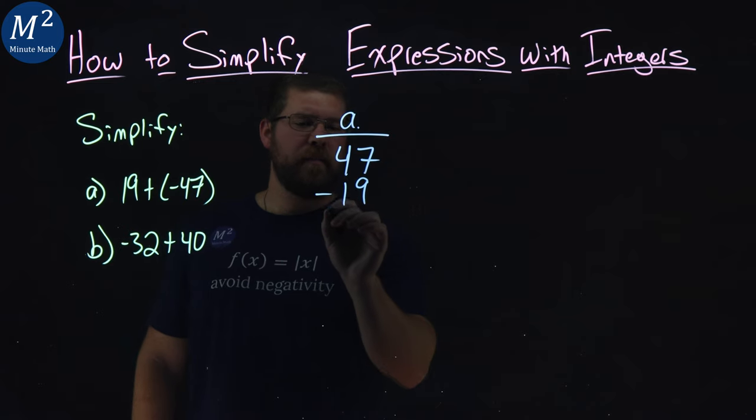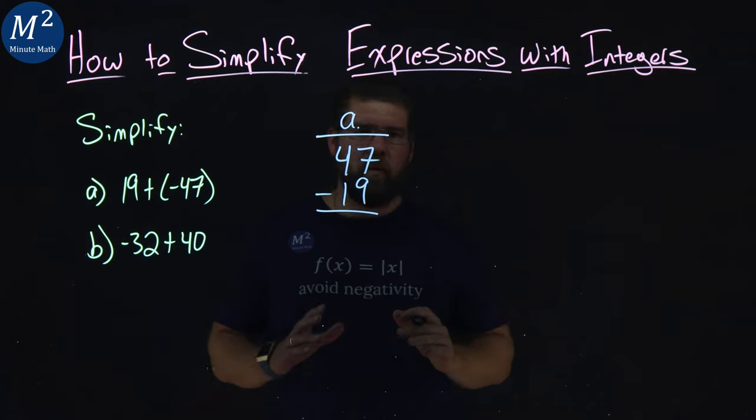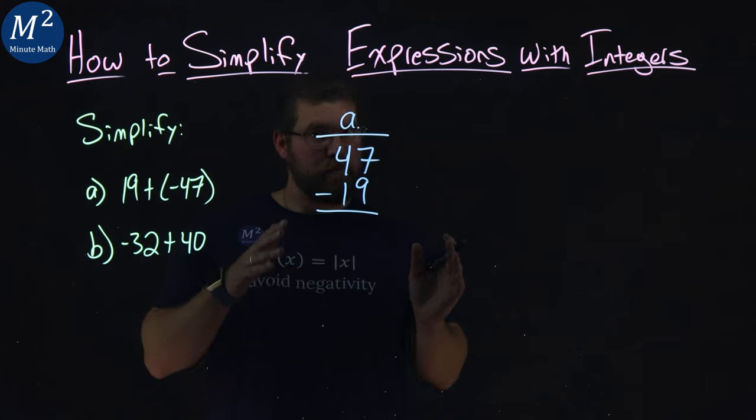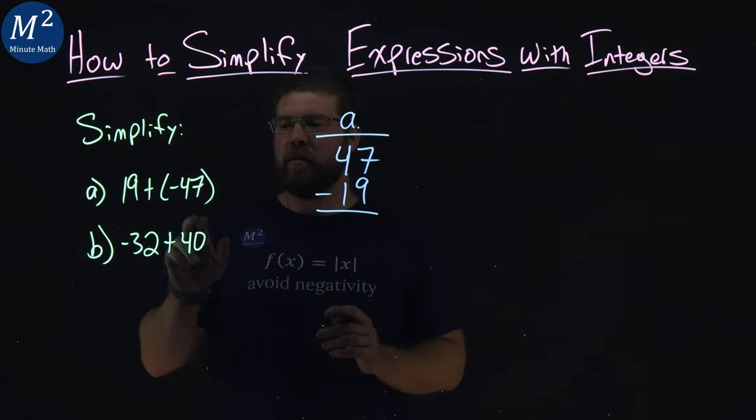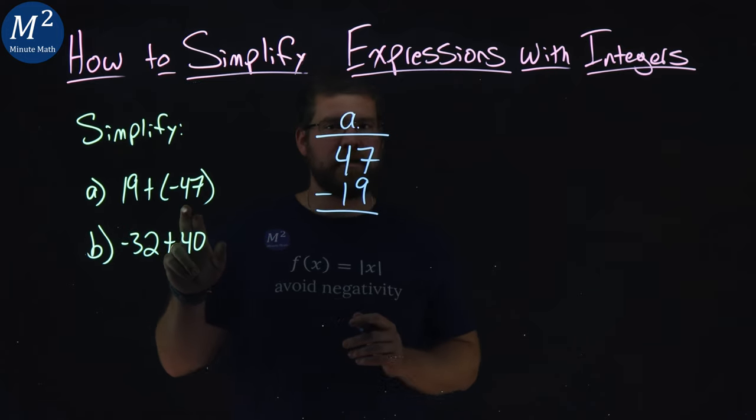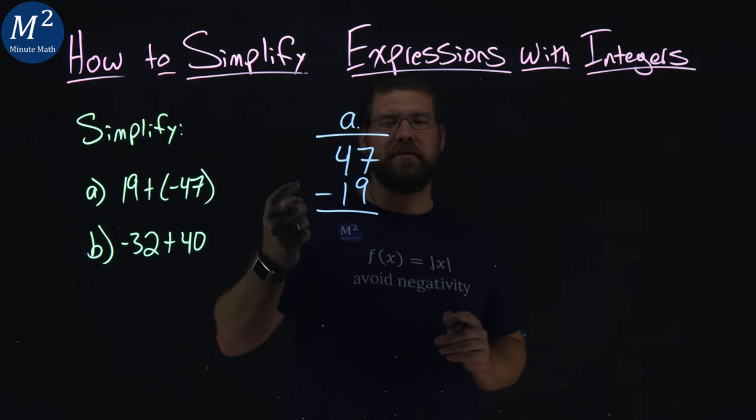So I'm going to subtract 19 from it. Now, whatever my result is has to be negative when it's all said and done, because my larger number is a negative 47. But this is a little technique here to subtract the two.